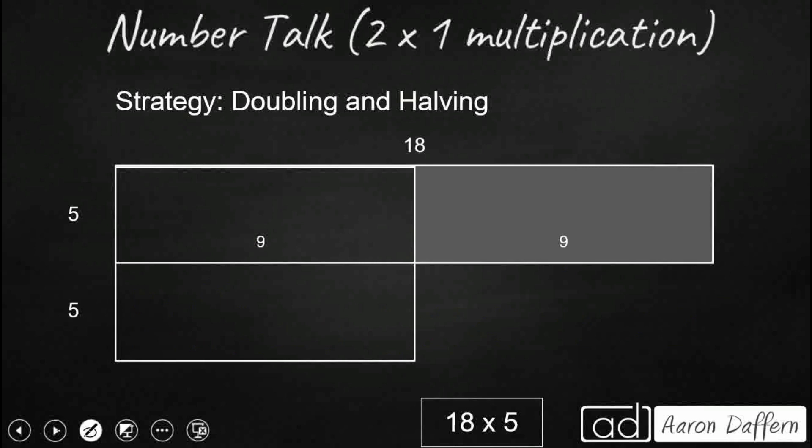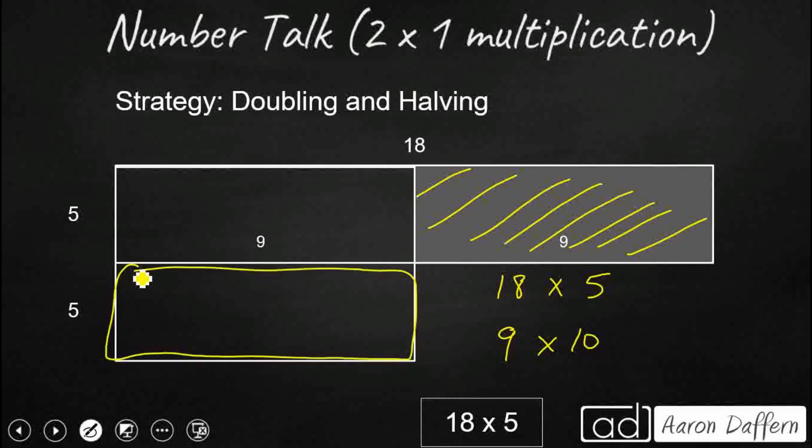Now some of you might have doubled and halved, and that's actually a pretty good strategy. Can't always use it. But what we know when we double and half, watch this. We'll do 18 times 5. If we take half of one number, so half of 18 is 9. So you notice how we took this part off right here. We can actually double the other number. Double of 5 is 10. You notice how we took our 5 and we added this other section right here. Well, 9 times 10 is easy. That's 90. So it doesn't always work. But when you get a chance, see if you can double and half. You take one factor and you cut it in half. And you take the other factor and you double it. And you still get the same answer, doubling and halving.